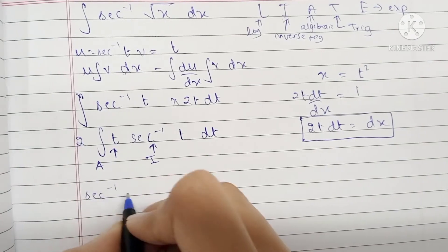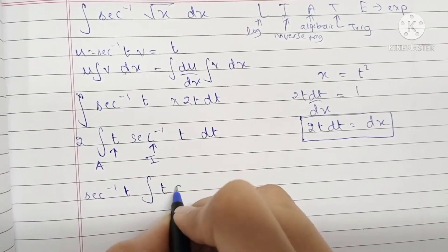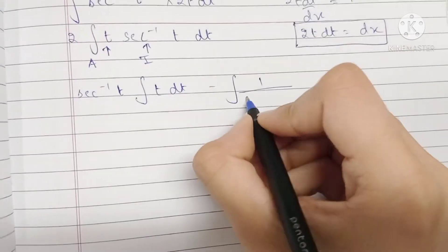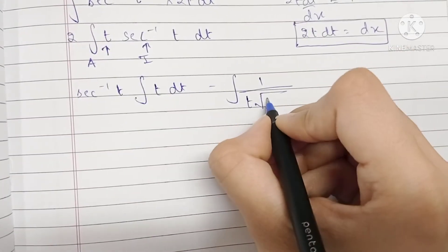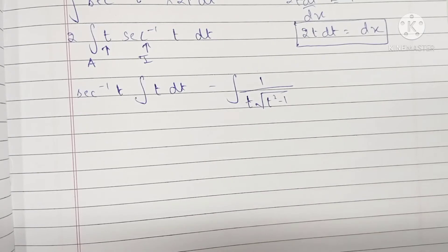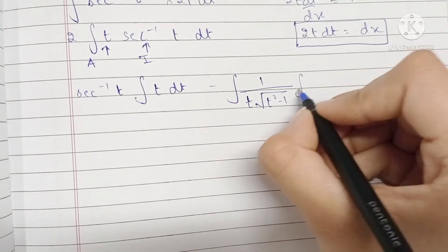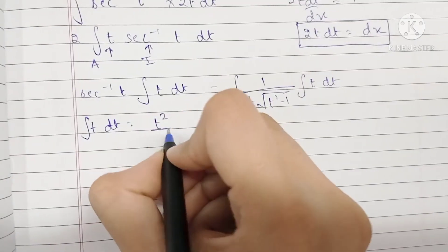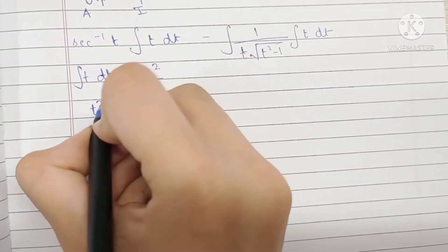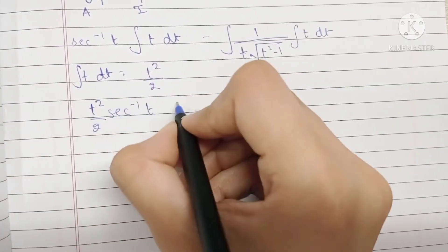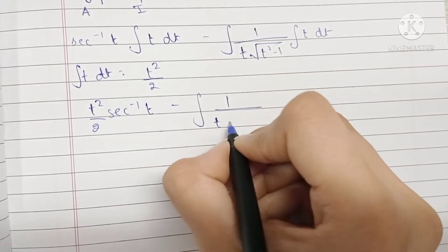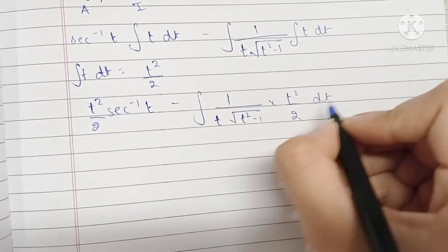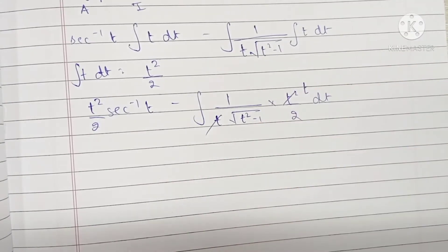So we have sec⁻¹(t) times the integral of t dt, minus the integral of the derivative of sec⁻¹(t) — which is 1/(t·√(t²−1)) — times the integral of t dt. The integral of t dt is t²/2, so we have t²/2 · sec⁻¹(t) minus the integral of (1/(t·√(t²−1))) times t²/2 dt. One factor of t cancels.